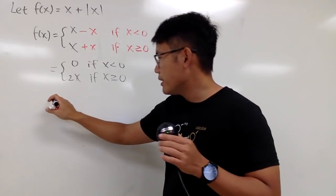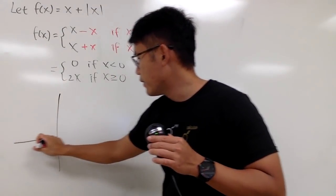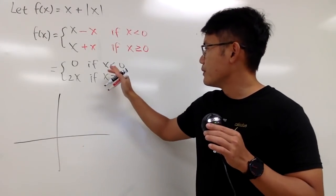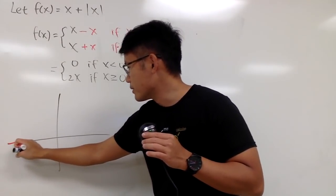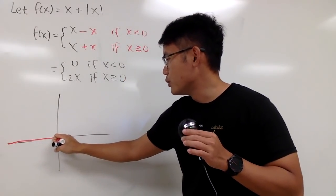So, from here, I can make a graph for you guys first. Well, we have 0, so that means it's like this, right, it's a horizontal line, pretty much the x-axis.